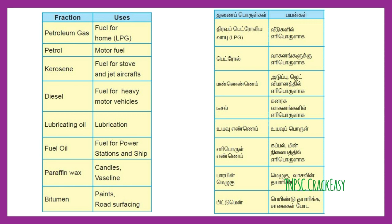Bitumen is used for road making. Paraffin wax is used for candles and Vaseline. Fuel oil is used as fuel. Lubricating oil is used for lubrication. Diesel is used as fuel for heavy motor vehicles. Kerosene is used as fuel for jet aircraft. Petrol is used as motor fuel.